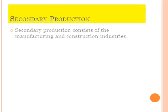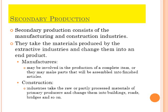The next level is secondary production, which consists of manufacturing and construction industries. They take materials produced by the extractive industries from primary production and change them into an end product. Manufacturers may be involved in producing a complete item or making parts assembled into finished articles. Construction industries take raw or partly processed materials from primary producers and change them into buildings, roads, bridges and so on.